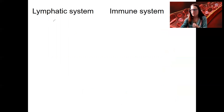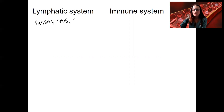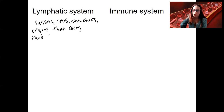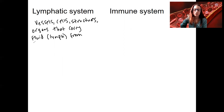Let's start with some definitions. The lymphatic system is a system of vessels, cells, and physical structures — organs and other structures — that carry fluids in the body, and in this case, back to the bloodstream. The fluid is called lymph, and the lymphatic system carries that lymph from the tissues back to the blood, showing very important overlap and integration with the cardiovascular system.